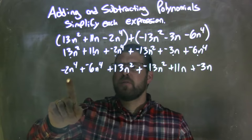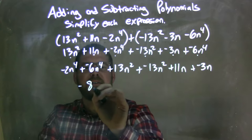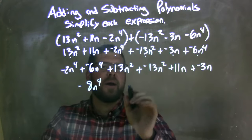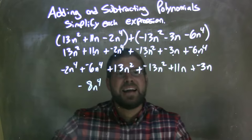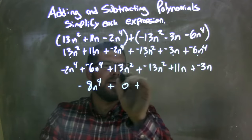So negative 2n to the fourth plus a negative 6n to the fourth is a negative 8n to the fourth. Got those two combined. Now 13n squared plus a negative 13n squared is just zero. So we have zero right there. They eliminate each other.